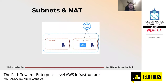Subnets allow us to create different behaviors in the same VPC. For instance, we can create a public subnet that can be accessed and has direct access to the internet, and we can have a private subnet which is not accessible from the internet and has access to the internet only through the NAT gateway — the Network Address Translation gateway.